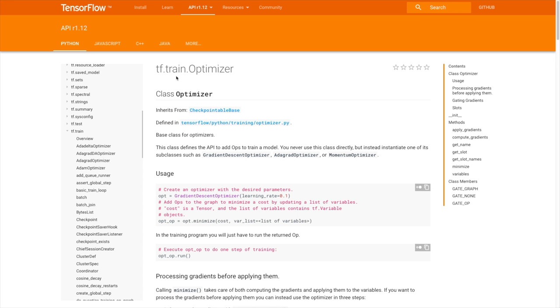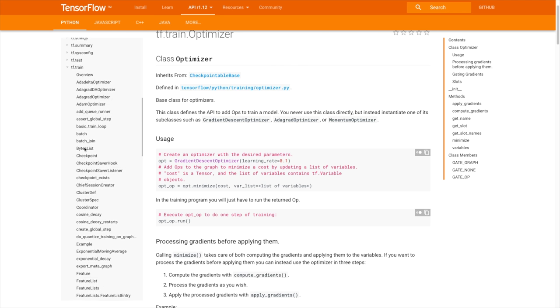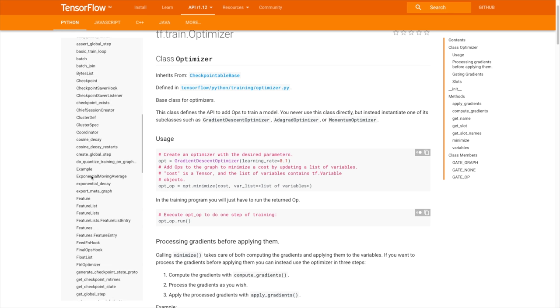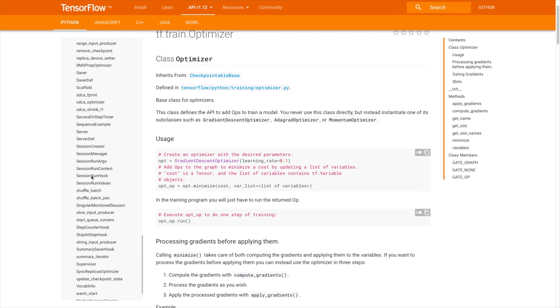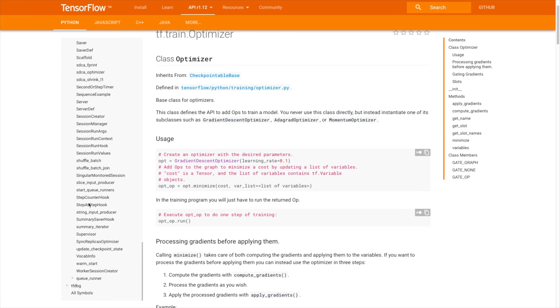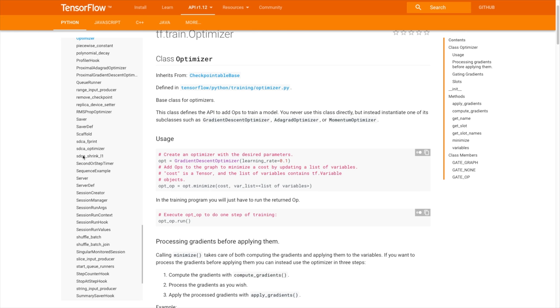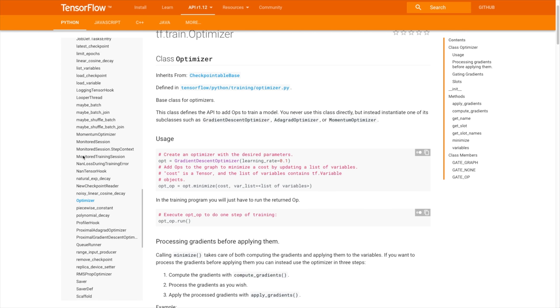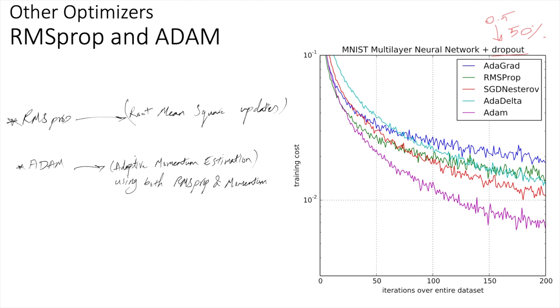This is TensorFlow. In the class of TF Train Optimizer, you can see all these different versions, like Gradient Descent Optimizer, Adagrad, Momentum Base. You can come down in the list, you might find Adam, Adam Optimizer. Just to let you know, if you wanted to play with these stuff, you know at least what they are.